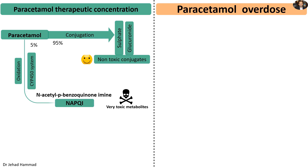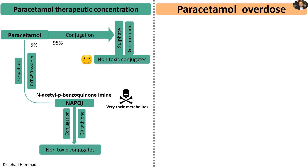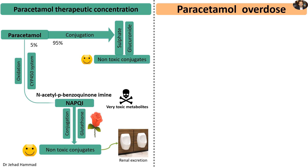NAPQI is a very toxic intermediate metabolite; it can induce severe acute hepatic necrosis. Fortunately, the glutathione molecules in our liver rapidly conjugate NAPQI molecules to produce non-toxic metabolites that can be safely excreted by the kidney.